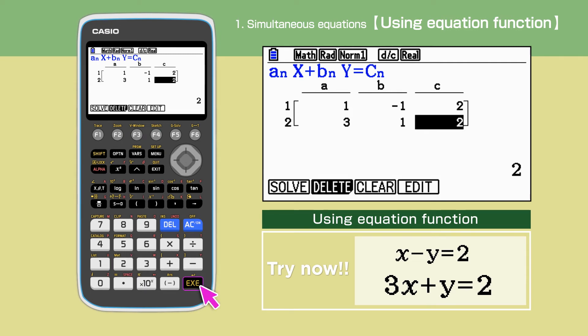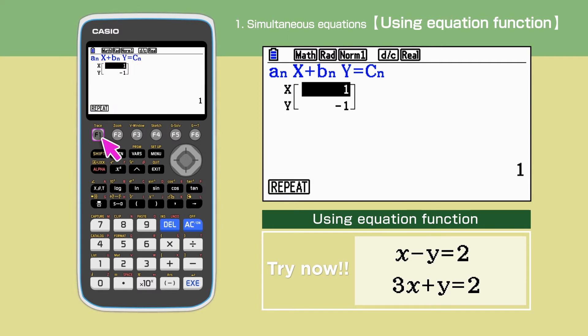Press Execute to confirm. Press F1 to solve the equations. The answer is 1 for X and minus 1 for Y.